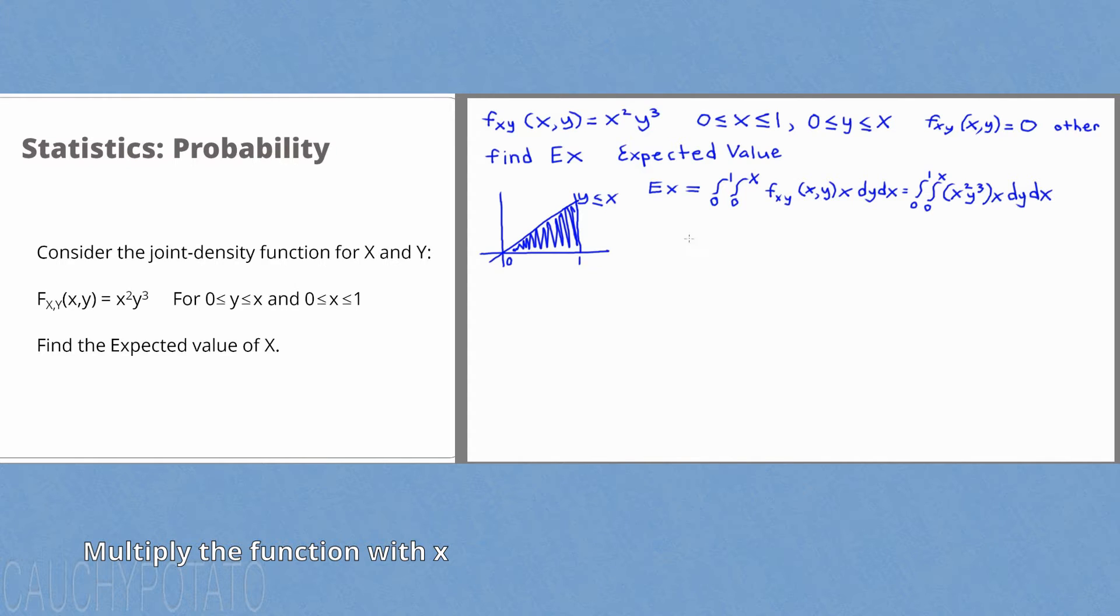Multiply the x with the function values and we get integral 0 to 1, 0 to x, x to the third times y to the third dy dx.